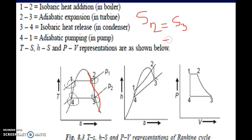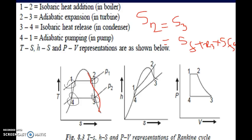Since s2 equals s3, we can write: s3 equals sf plus x3 times sfg. The values of sf and sfg are obtained from the steam table at point 3, which corresponds to the condenser pressure given in the question. After calculating the dryness fraction x3 from this equation, h3 can be calculated.